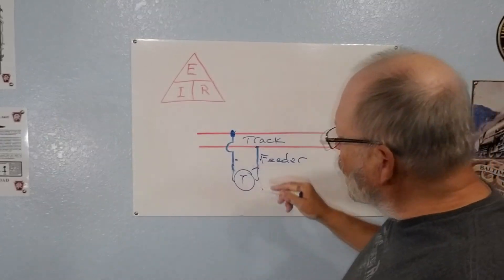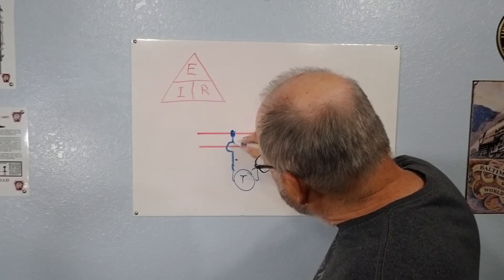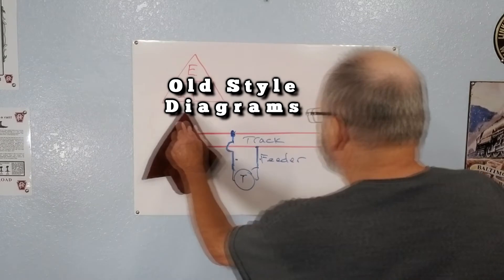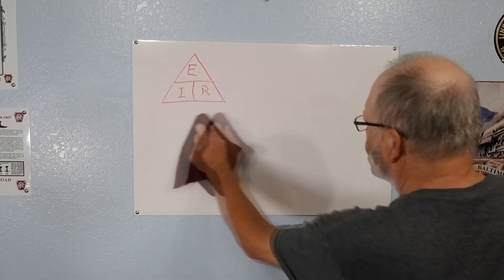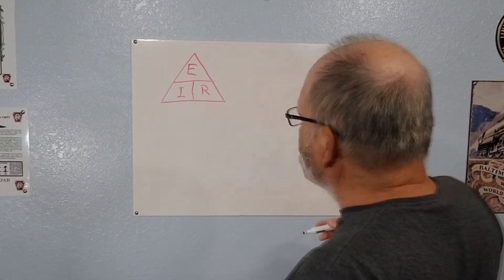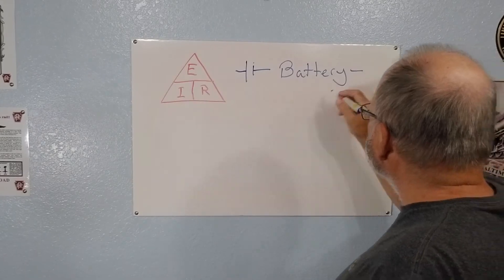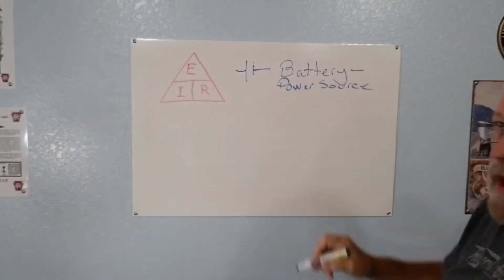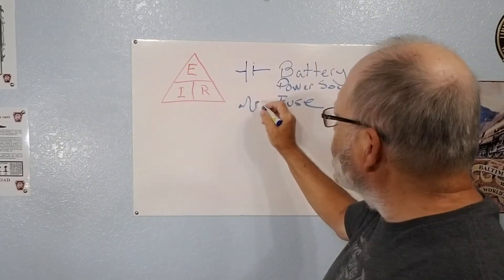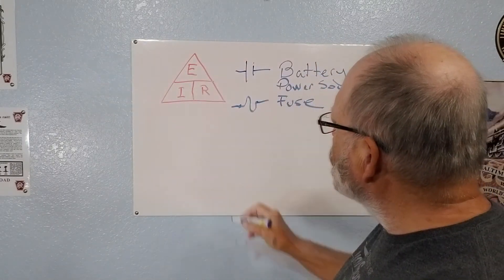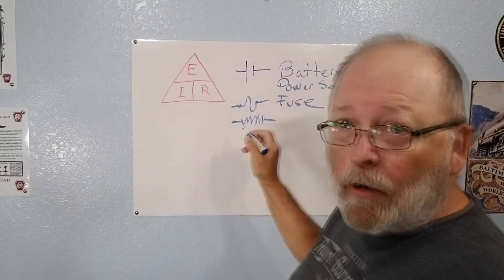Whenever you have a little dot right there that means that's a connection. You'll see that a lot when you have a little thing that jumps over a wire here that means they're not connected. I'm going to show you a few more symbols that you're going to need to know. That could be a battery or that could be your power source, battery or power source. That's a symbol for a fuse.